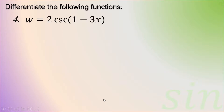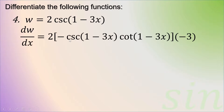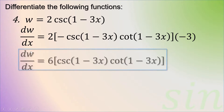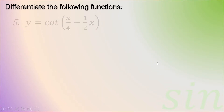Example four: w is equal to 2 times cosecant of 1 minus 3x. The differential of cosecant is negative cosecant u cotangent u, and our u is 1 minus 3x. So that is negative cosecant of 1 minus 3x times cotangent of 1 minus 3x, then deriving u gives negative 3. Simplifying, negative times negative 3 gives positive 6 cosecant of 1 minus 3x cotangent of 1 minus 3x.